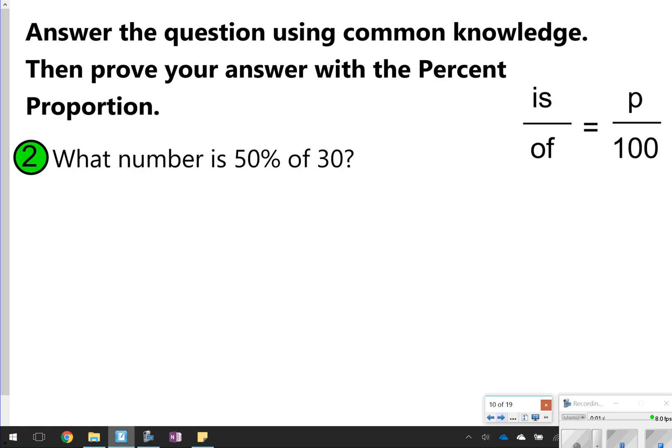So this first one you're going to write down and try with me. It says, answer the question using common knowledge, then prove your answer with the percent proportion. So we already know that 50% of 30 is whatever half of 30 is, which is 15. But how would we show this with the percent proportion?